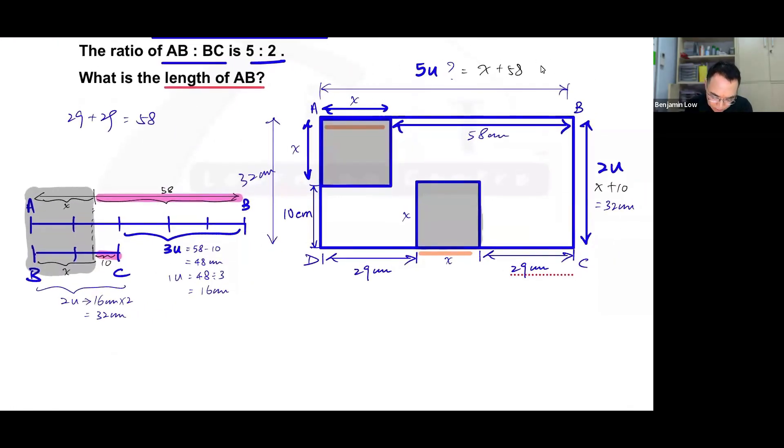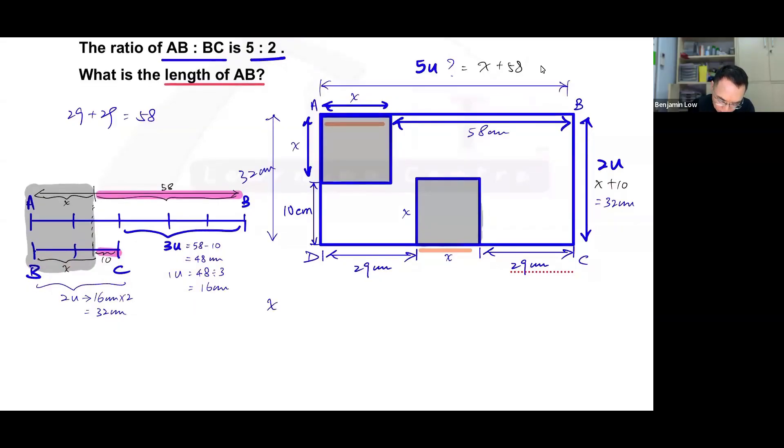So you can see here that x plus 10 is 32. Same here, x plus 10 is 32. So if I take 32, I minus away 10, I will get 22 over here. So with this, we have found the value of x. So we know that x is 32 minus 10 equals to 22.